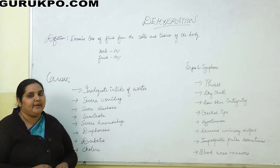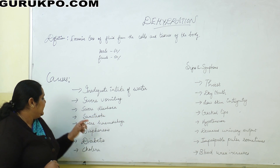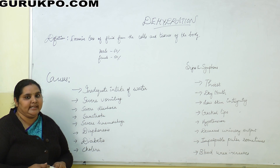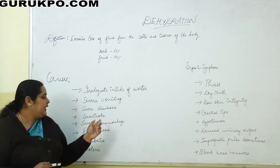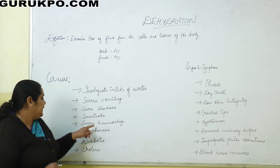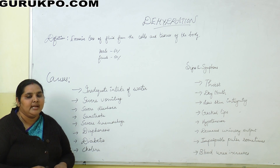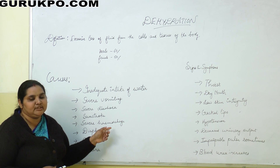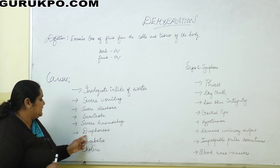Next cause is severe diarrhea. If the person is passing loose stools more than five to six times, they will suffer from dehydration. Next is sunstroke — the radiation emitted by the sun takes fluid from our body. Next is severe hemorrhage — any injury or trauma causing severe bleeding also causes dehydration.